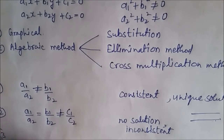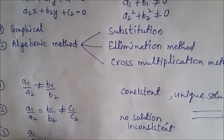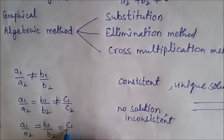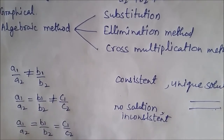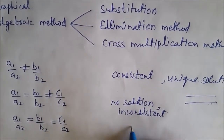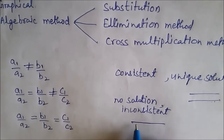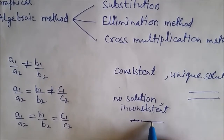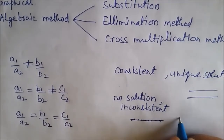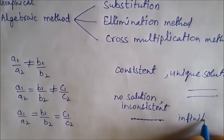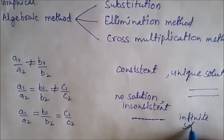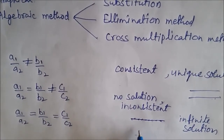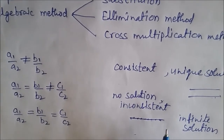The third case arises when a1 upon a2 is equal to b1 upon b2 and this is equal to c1 upon c2. In this case, the lines coincide with each other — the second line overlaps the first. The pair of equations has infinitely many solutions. All these points are points of intersection and the equations are consistent and dependent on each other.